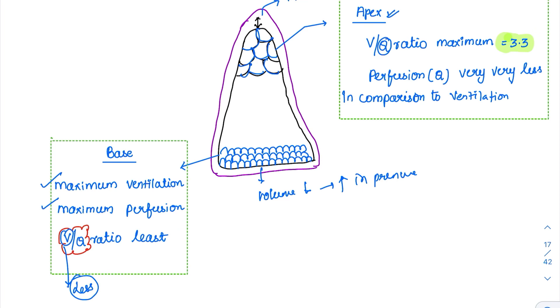Don't get confused with the options: V/Q ratio is maximum at the apex and least at the base. But maximum ventilation and maximum perfusion — both are high at the base.